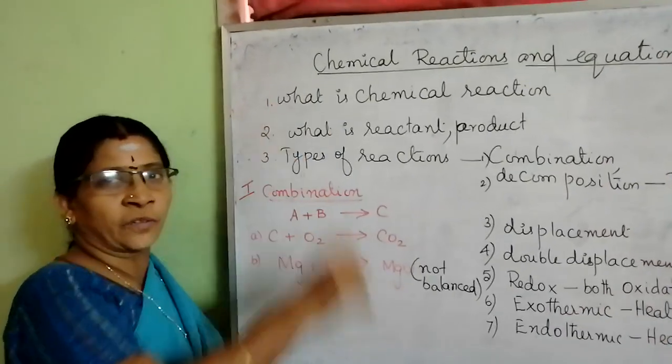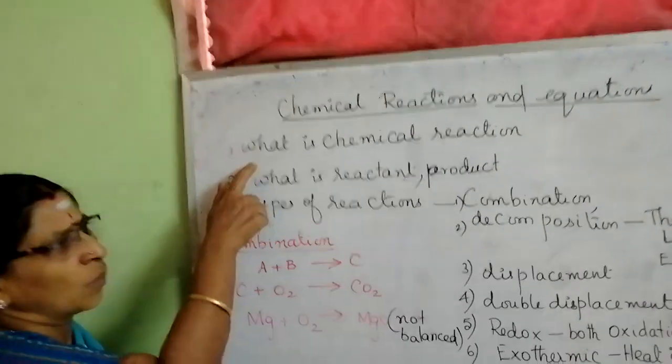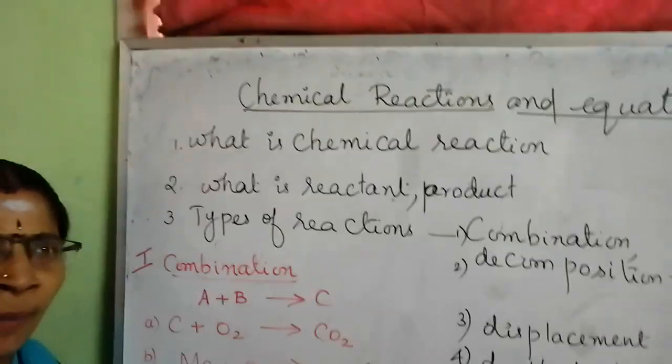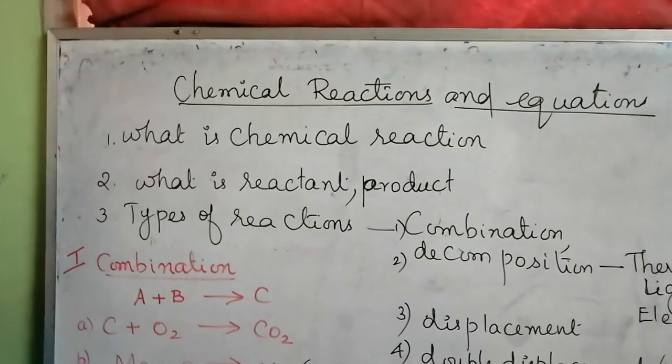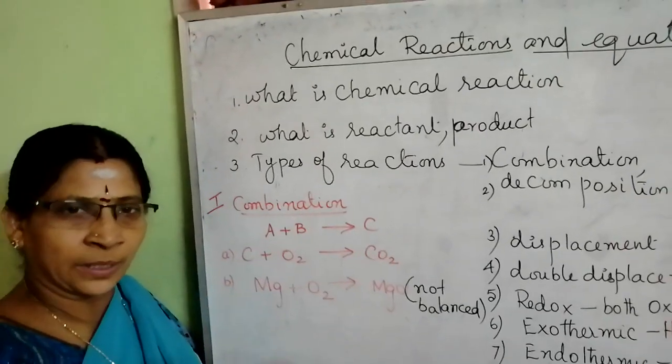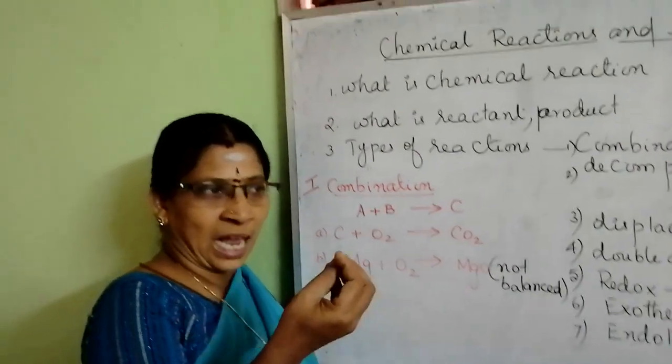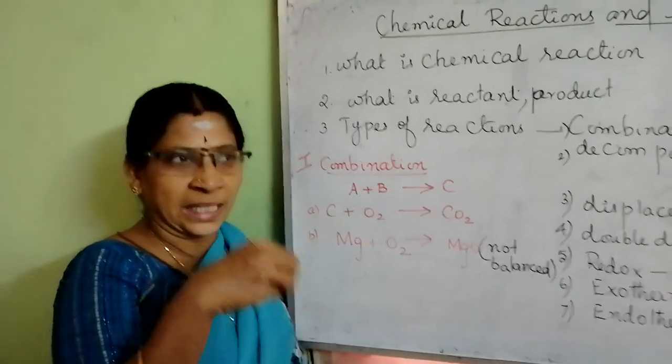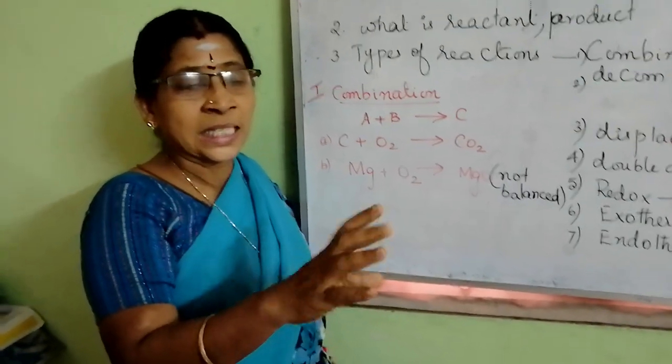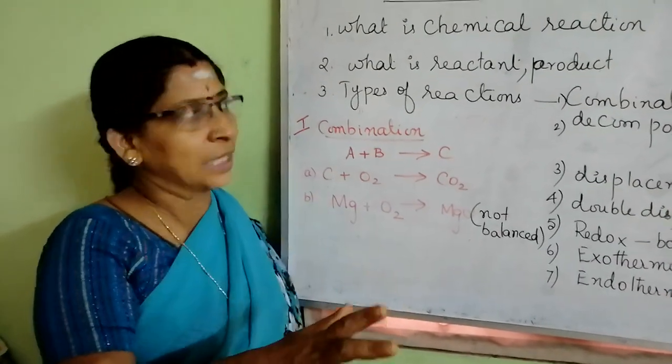Good morning children. Today we are going to talk about chemical reactions and equations. What is chemical reaction? In our daily life we come across many processes. For example, milk is changed into curd. If you keep the milk for a long time in summer season, it will become settled at the bottom. We are taking food, the food is getting digested. In all these processes, the change that is occurring is irreversible.